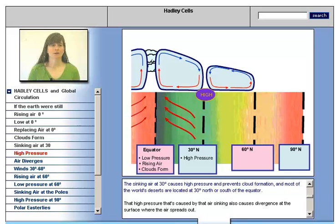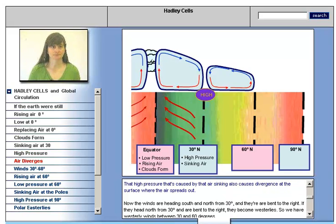The sinking air at 30 degrees causes high pressure and prevents cloud formation. Most of the world's deserts are located at 30 degrees north or south of the equator. That high pressure caused by the sinking air also causes divergence at the surface where the air spreads out.